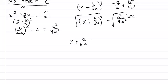equal to plus or minus the square root of b squared minus 4ac and then the square root of 4a squared is just going to be 2a.